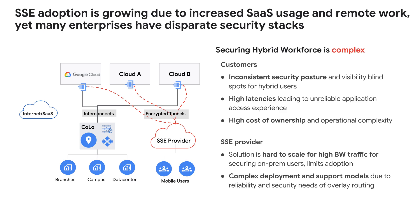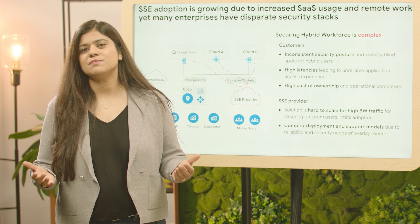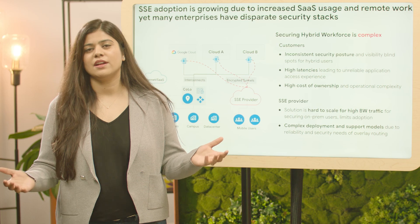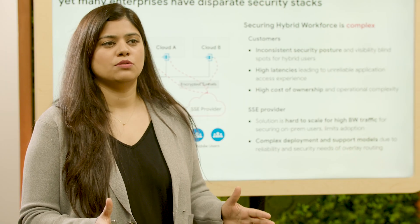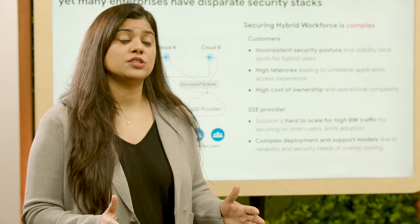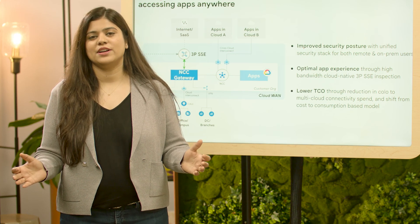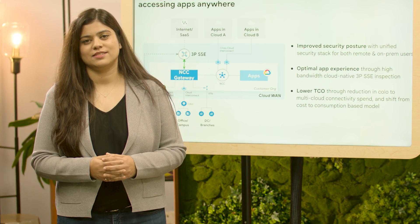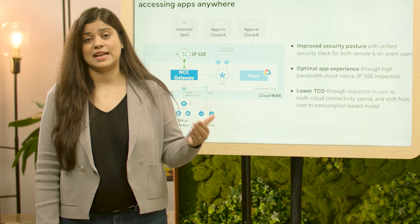Remote users experience higher latency when accessing private apps in cross-cloud environments. This also creates an operational burden for security administrators who must manage separate security solutions for on-prem and remote user access. SSE providers also run into scale and reliability challenges for high-bandwidth on-prem traffic due to deployment complexity and the overhead of managing large numbers of encrypted tunnels to private apps. Rapid cloud adoption necessitates simplified cloud-delivered security, without forcing traffic through on-prem networks. There is a growing need for consistent security and controls across cloud, on-prem, and SaaS apps.